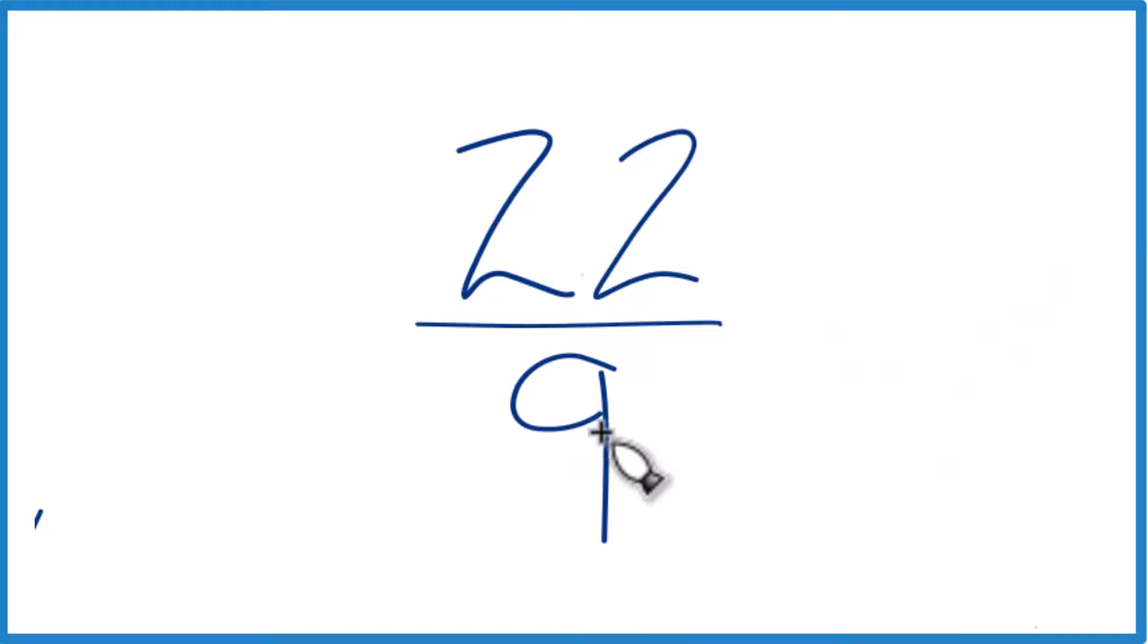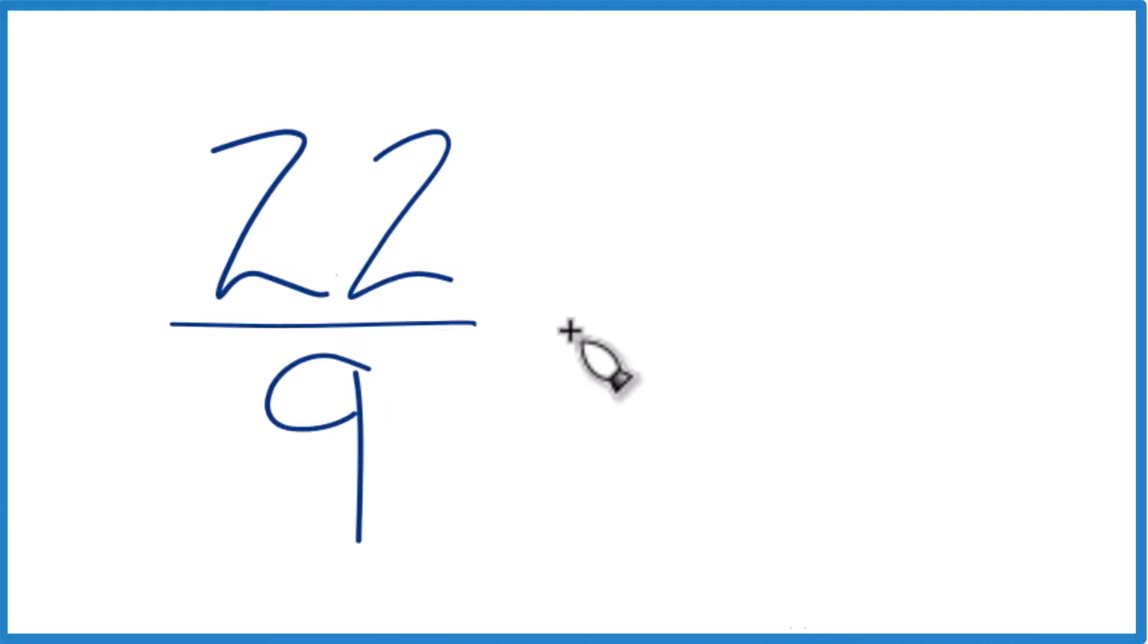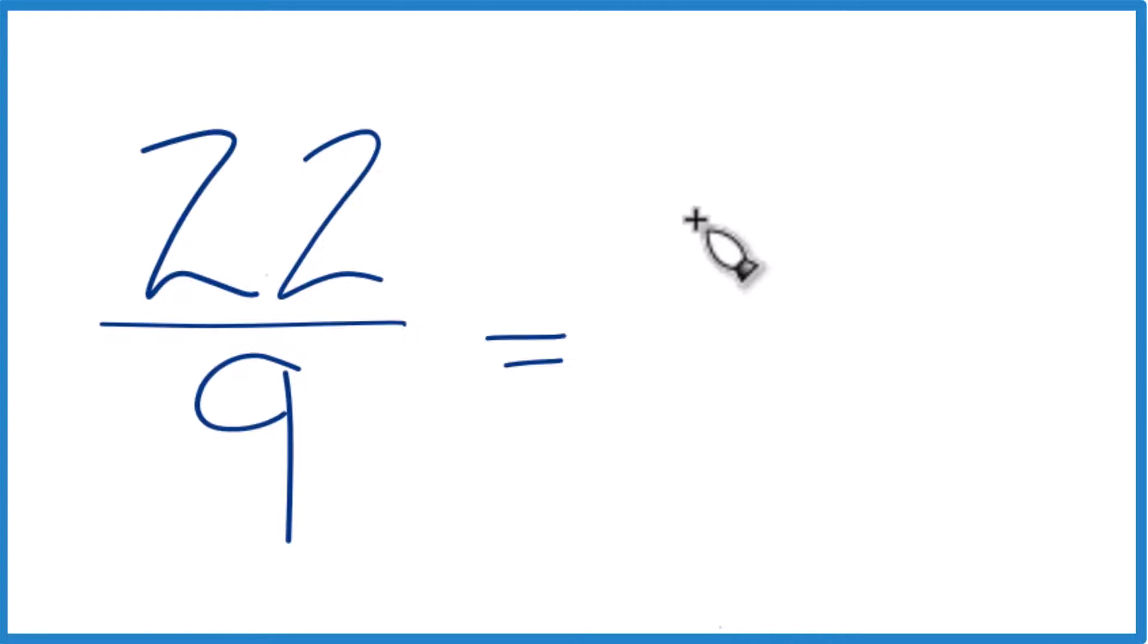So we want to see how many times 9 goes into 22. 9 times 2, that's 18. That's pretty close, so let's have a whole number of 2 here. 2 times 9, that's 18, and that leaves 4 over, remainder of 4.